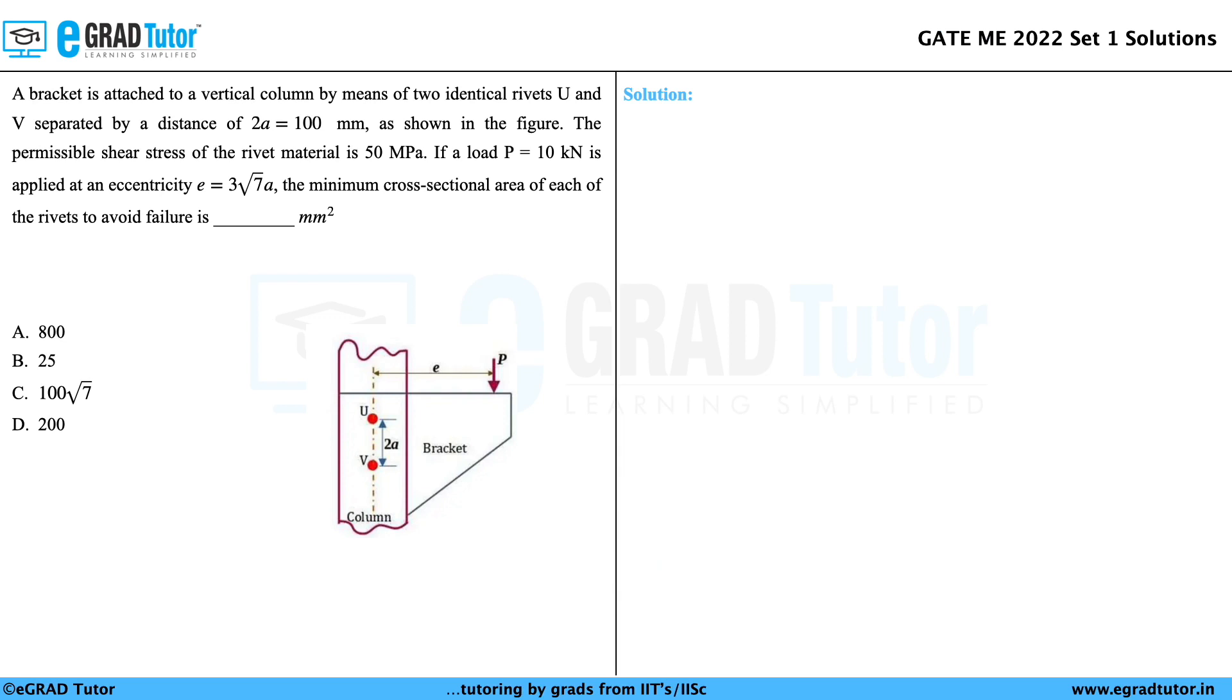A bracket is attached to a vertical column by means of two identical rivets U and V separated by a distance of 2A = 100 mm, as shown in the figure. The permissible shear stress of the rivet material is 50 MPa. If a load P = 10 kN is applied at an eccentricity E = 3√7A, the minimum cross-sectional area of each of the rivets to avoid failure is ___ mm².